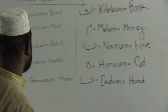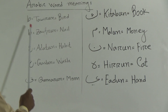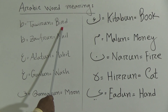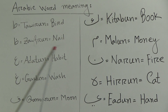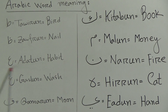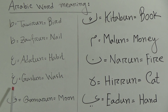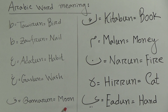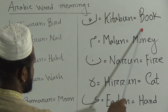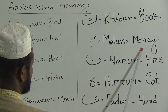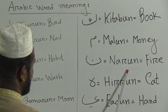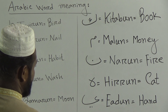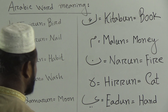Dear students, let's come to the board and listen. Arabic word meanings: Taa for Tairun — Tairun means bird. Zaa for Zufrun — Zufrun means nail. Ain for Adatun — Adatun means habit. Ghayn for Ghuslun — Ghuslun means wash. Qaaf for Qamarun — Qamarun means moon. Kaaf for Kitabun — Kitabun means book. Meem for Malun — Malun means money. Noon for Narun — Narun means fire. Haa for Hirun — Hirun means cat. Yaa for Yadun — Yadun means hand.